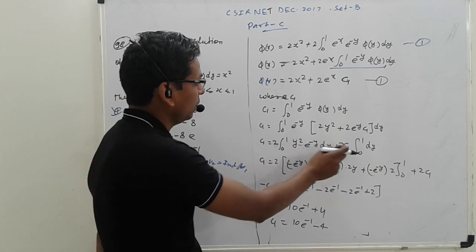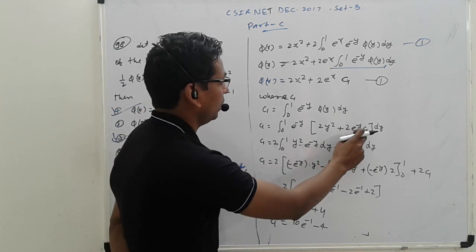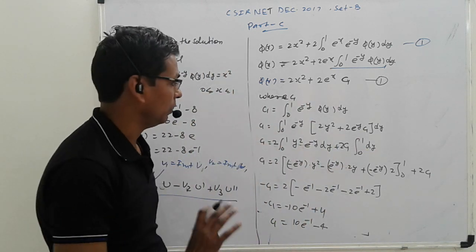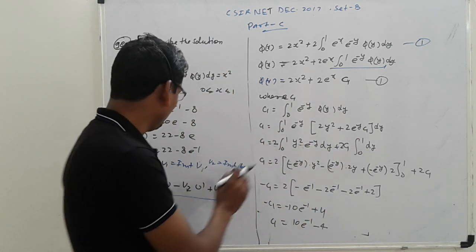Okay, that is 2 plus 2 C1 here, and e raise to minus y e raise to y, this is only 1 dy.